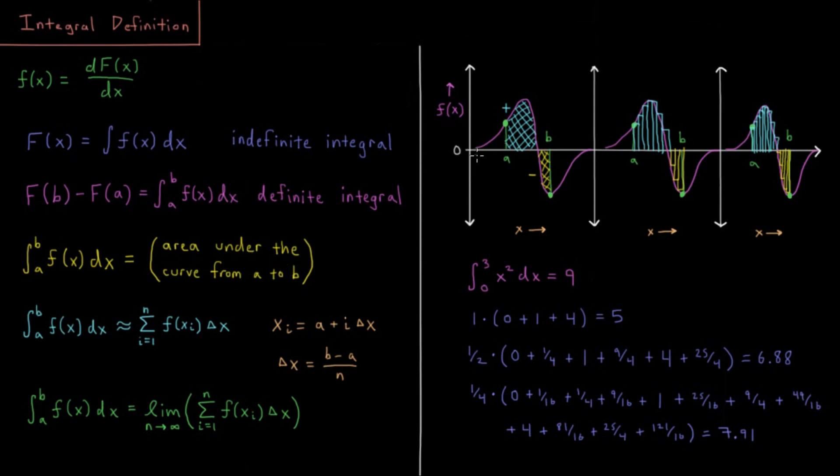So if we have some function f here and maybe it goes up and then through zero and down and we have the value a defined here, x equals a, the value x equals b is over here. Then we want to know what the area under the curve is, the area between the function and x equals zero at any point in this function from a to b.